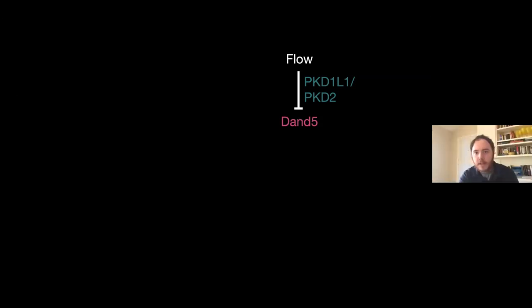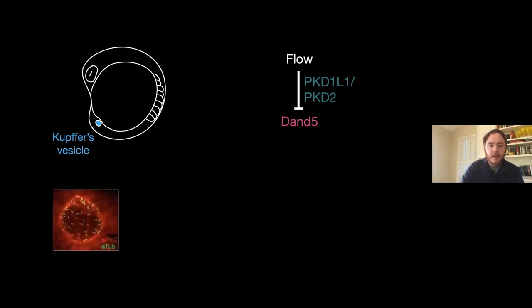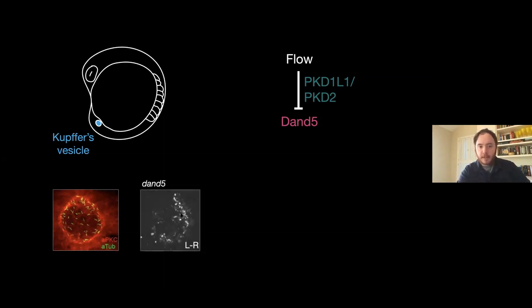This is the current simple model of where we are. As mentioned in the question, this is very highly conserved in zebrafish as well. This whole module exists—fluid flow, Dand5 repression, these two genes have a critical role. The structure in which this is occurring is quite different in zebrafish. Instead of being like the flat node plane in mouse, in fish it's actually an internal sphere with the cilia pointing inwards. It's hard to imagine how asymmetric flow is generated, but when you image the fluid, it's clearly stronger on the left-hand side. That again manifests as Dand5 left-right asymmetry.